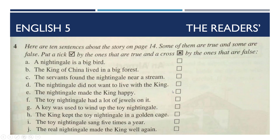Next: The nightingale made the king happy — بلبل نے بادشاہ کو خوش کیا — it's true. Next: The toy nightingale had a lot of jewels on it — بلبل کے کھلونے پر بہت سے موتی جڑے ہوئے تھے — it's true. Next: A key was used to wind up the toy nightingale — چابی بلبل کے کھلونے کو چلانے کے لیے استعمال ہوتی تھی — it's true. Next: The king kept the toy nightingale in a golden cage — بادشاہ نے بلبل کو ایک سونے کے پنجرے میں رکھا — it's true. Next: The toy nightingale sang five times a year — بلبل کا کھلونا سال میں پانچ دفعہ گاتا تھا — it's false, cross کریں گے۔ Next: The real nightingale made the king well again — اصل بلبل نے بادشاہ کو دوبارہ صحتیاب کر دیا — it's true, tick کریں گے۔